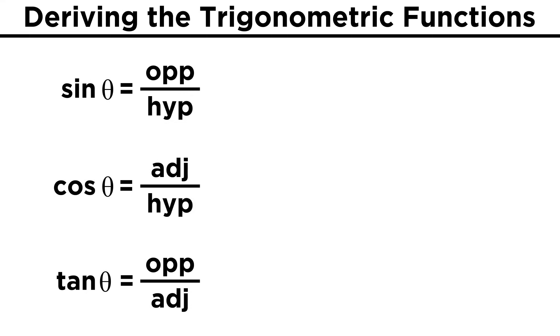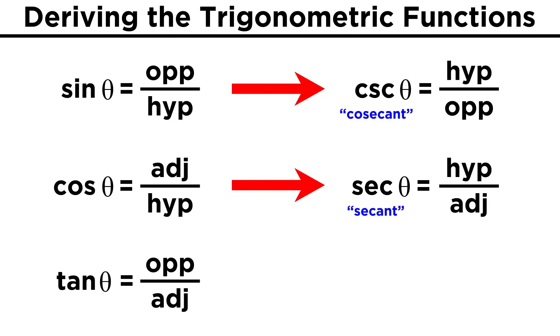Now we must learn the reciprocals of these functions. Cosecant is the reciprocal of sine. If sine is opposite over hypotenuse, cosecant is hypotenuse over opposite. Secant is the reciprocal of cosine, so instead of adjacent over hypotenuse, it's hypotenuse over adjacent. Cotangent is the reciprocal of tangent, so instead of opposite over adjacent, it's adjacent over opposite.